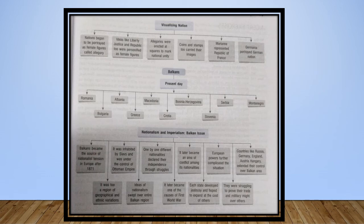Visualizing the nation: nations began to be portrayed as female figures called allegories. Ideas like liberty, justice and republic too were personified as female figures. Allegories were erected at squares to mark national unity. Examples of allegories include Germania and Bharatmata. Coins and stamps too carried their images. Marianne represented the Republic of France, and Germania portrayed the German nation.